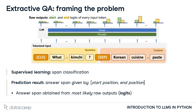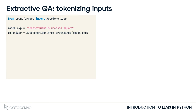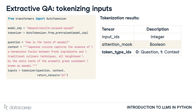Let's see this process in action. First, we instantiate a custom tokenizer and model checkpoint for extractive QA. We opt for a version of the MiniLM model already fine-tuned on the SQUAD dataset. Next, we specify the input example strings for the question and context, passing them to our tokenizer and requesting the results as PyTorch tensors. The resulting inputs variable includes input IDs and attention mask tensors, as well as a token type IDs tensor with zeros for question tokens and ones for context tokens.